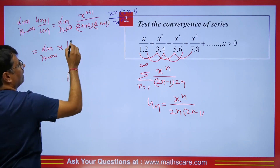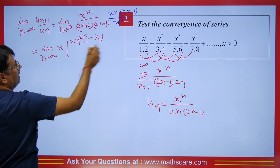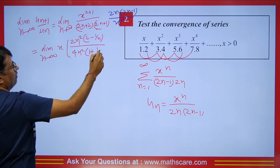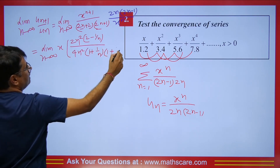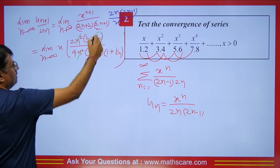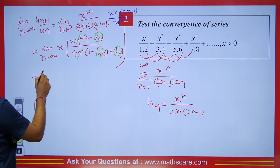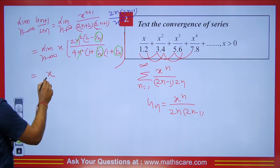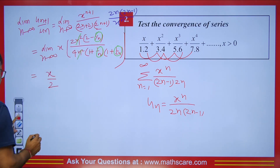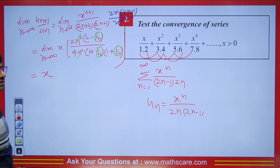After simplification — taking 2n common and 4n² terms — the n² cancels with n², and the 4 in numerator and denominator cancel, leaving the limit equal to x. So the series converges when |x| < 1.